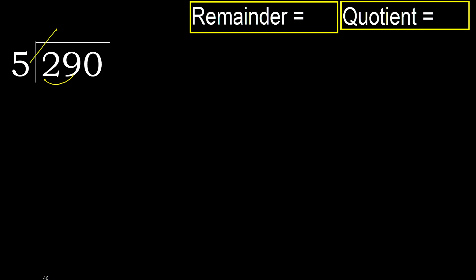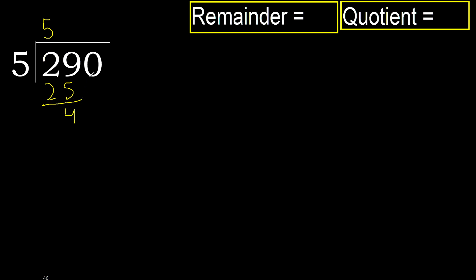5 multiplied by which number is nearest to 29 but not greater? 5 multiplied by 6 is 30 — 30 is greater. 5 multiplied by 5 is 25 — 25 is not greater. So we subtract: 29 minus 25 is 4.